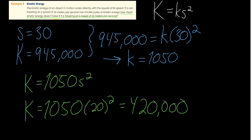So the kinetic energy is 420,000 joules at 20 meters per second. Again, the same procedure: figure out the equation form, then find k using the given values, and finally use that equation to answer the question. The hard part is just figuring out what goes where.